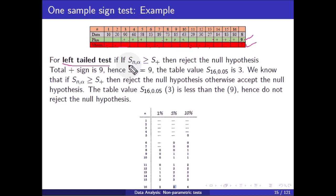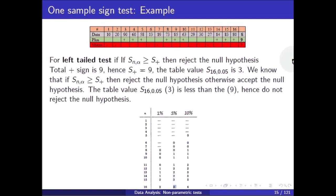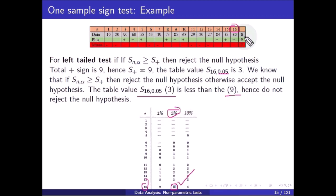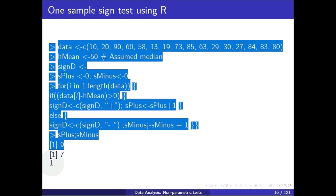Since we are applying the left-tail test, we check whether S(n, alpha) is greater than S-plus. S-plus is 9. The table value S(16, 0.05) is 3, where 16 is the total number of data points and 0.05 is the level of significance. Since the table value 3 is less than S-plus = 9, we do not reject the null hypothesis.